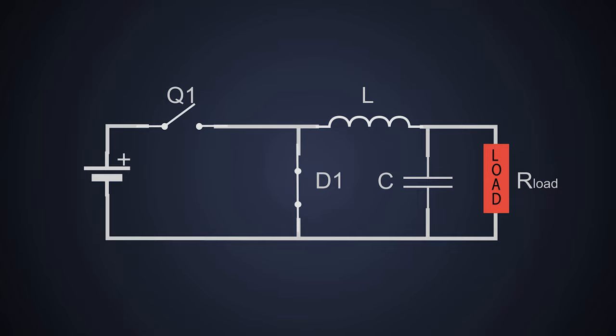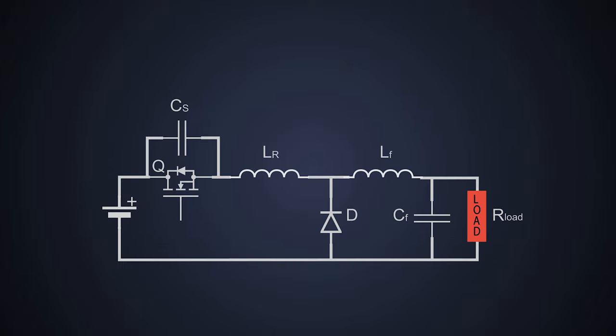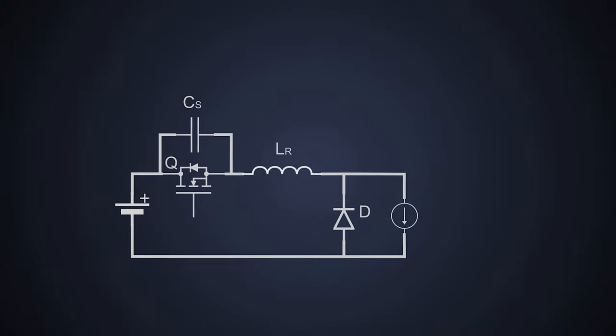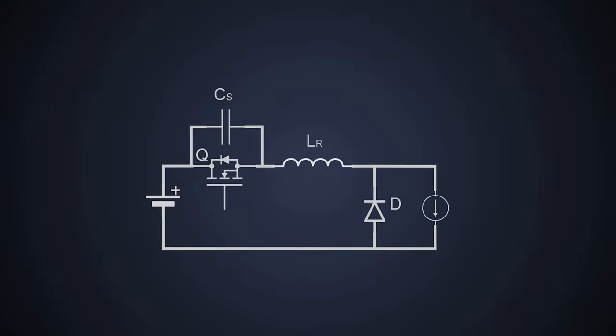We will consider this as the steady state of the converter. For simplicity, we can replace this LC output circuit and load with a constant current source, because no matter what, a constant current will flow through the output of this converter.